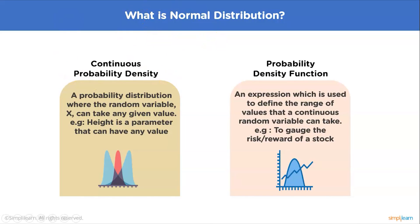It is impossible to exactly measure any variable on a continuous scale, so it's impossible to find the probability of one exact measurement in a continuous probability density. The probability density function is a function used to define the range of values a continuous random variable can take — for example, gauging the risk and reward of a stock. It gives us the range of values within which variables will fall.